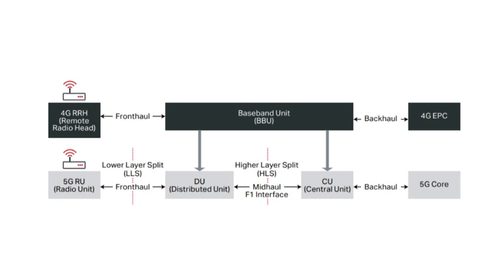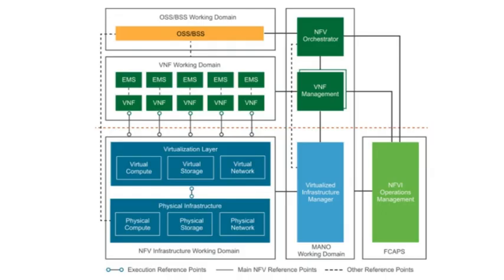DU is the distributed unit. It runs the Radio Link Control and Medium Access Control layers, and parts of the physical layer. We normally place DU closer to the RRU. CU, the centralized unit, handles the Radio Resource Control and Packet Data Convergence Protocol layers, and the Service Data Adaptation Protocol in the case of 5G. One CU can connect to multiple DUs, and the CU can be collocated with a DU or placed far from it.